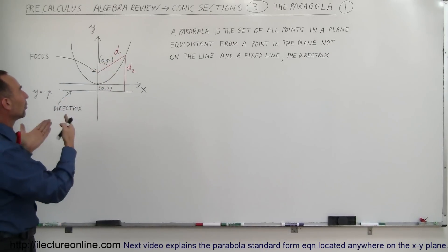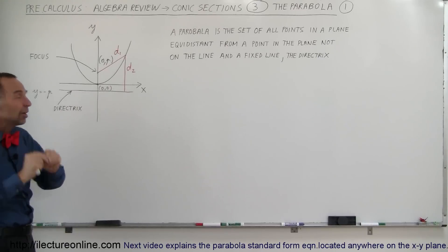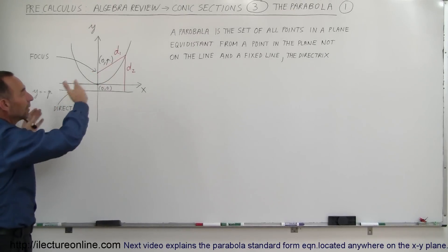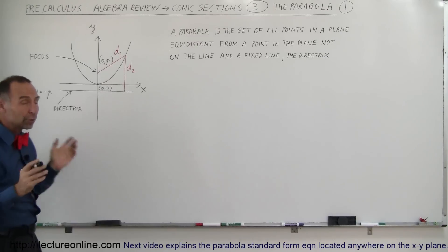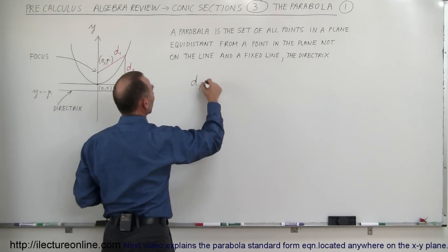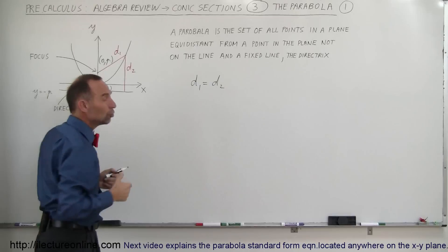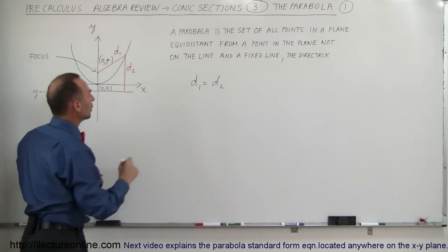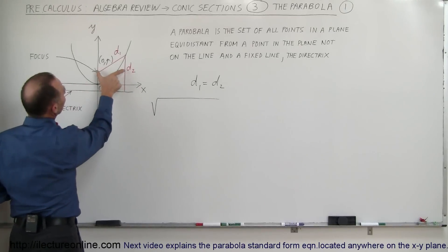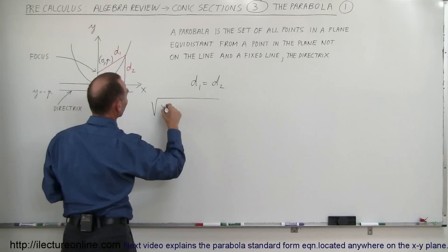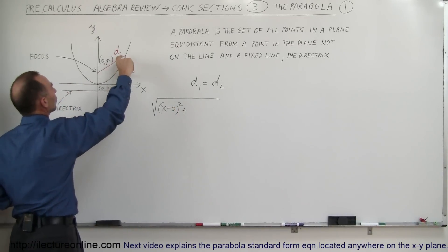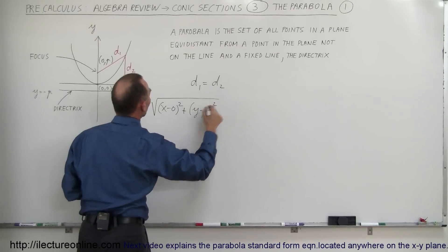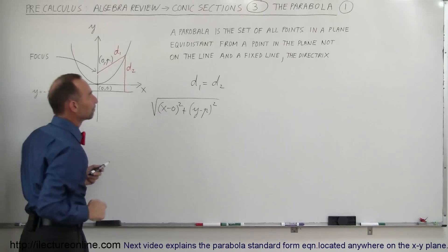So what will be the equation that describes that general problem? It's not quite a general problem because we have very specifically put the vertex on the origin. Later on we'll show you how we can morph that equation to where the vertex is anywhere on the xy plane. So we're going to set d1 equal to d2 — by definition d1 must equal d2 — and now we're going to calculate d1 and d2 using the distance formula. Distance d1 equals the square root of the x distance squared plus the y distance squared. So d1 is the square root of (x minus 0) squared plus (y minus p) squared.